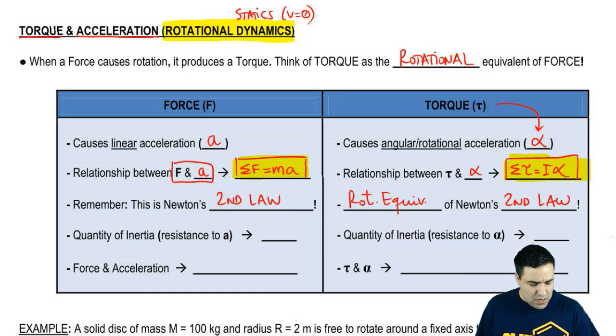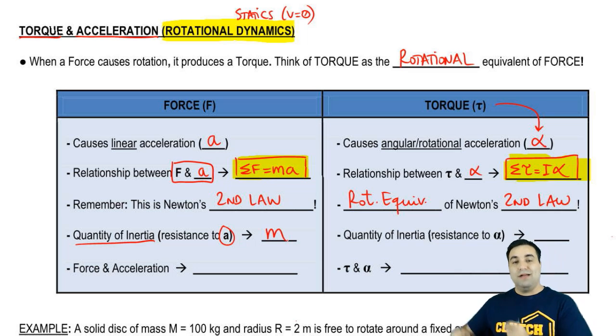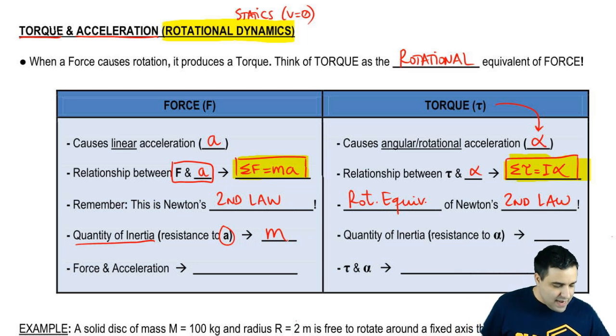So the quantity of inertia, quantity of inertia is how much resistance you have to acceleration, to linear acceleration, is given by the letter M, by mass. So mass is the amount of resistance to change, the amount of inertia you have. And the amount of resistance to alpha is not M, but it is I.